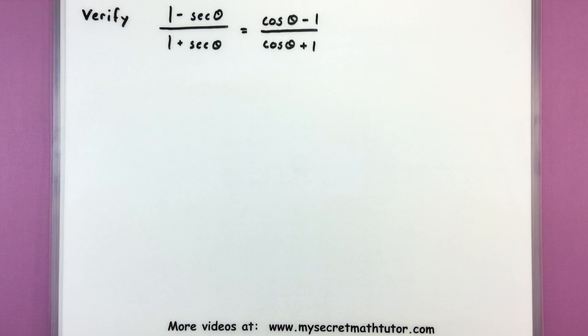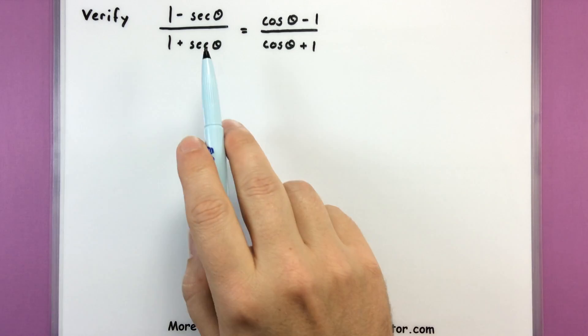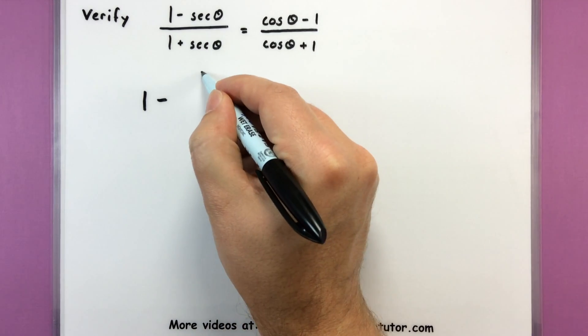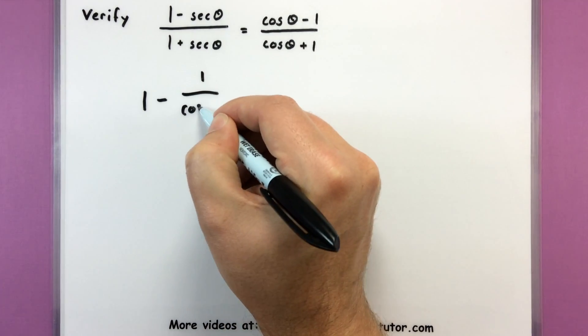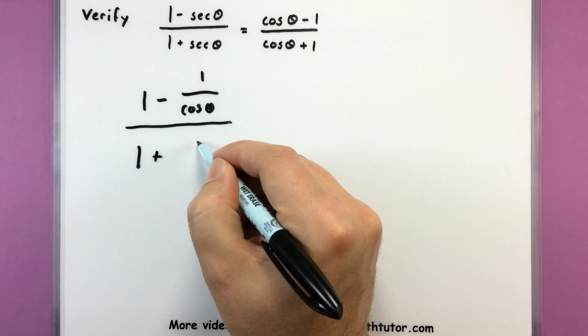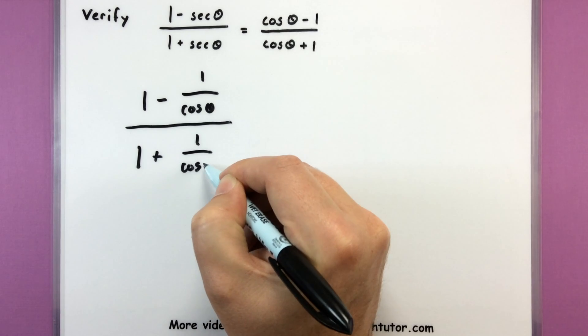For this one I have 1 minus secant of theta all divided by 1 plus secant of theta. That's equal to cosine of theta minus 1 all divided by cosine of theta plus 1. Not sure if these are equal but we'll find out really quickly. I have a really good feeling about this one because secant is equal to 1 divided by cosine. And since I'm looking for cosines I'm just going to immediately change them into cosines. So 1 minus 1 divided by cosine of theta all divided by 1 plus 1 over cosine of theta.